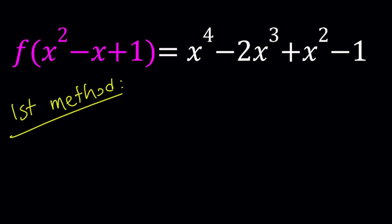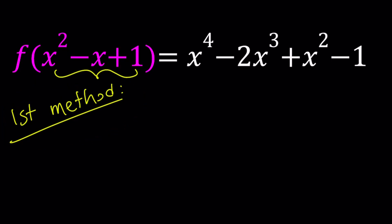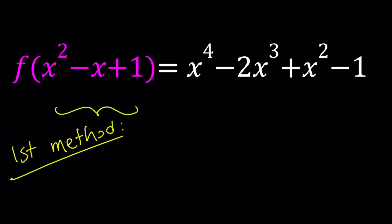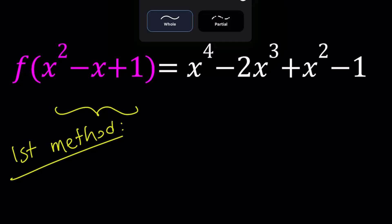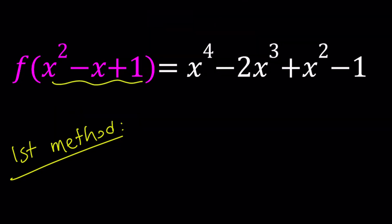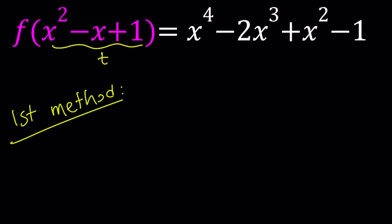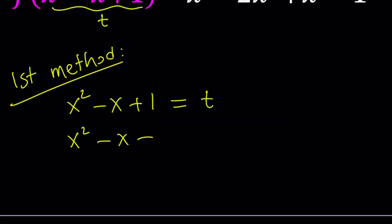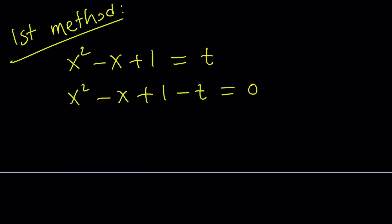The first method is called 'no pain no gain.' Let me just tell you ahead of time that the first method will not be complete. So let's go ahead and call this expression something. I'm going to call it t, so x squared minus x plus 1 equals t. If you subtract t from both sides, you get a quadratic equation in x, and we can solve it using the quadratic formula.